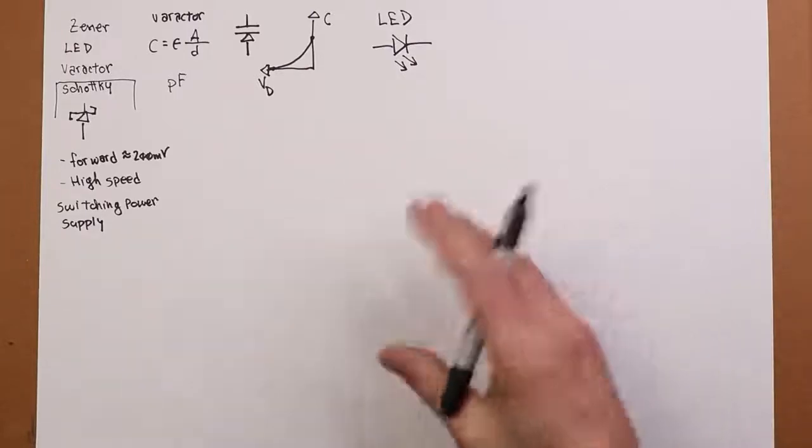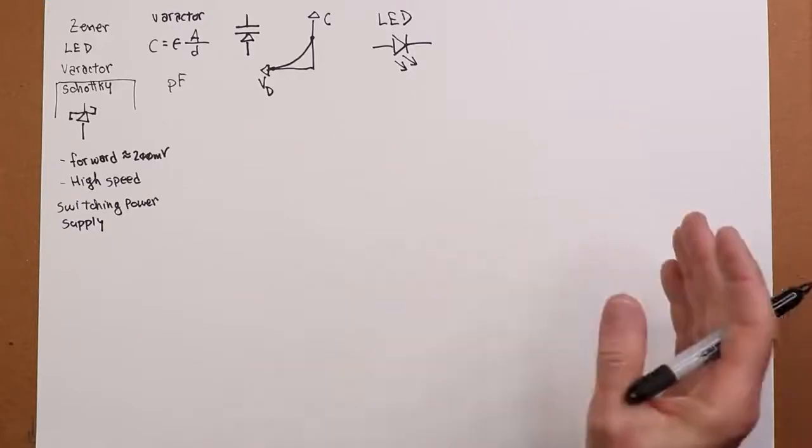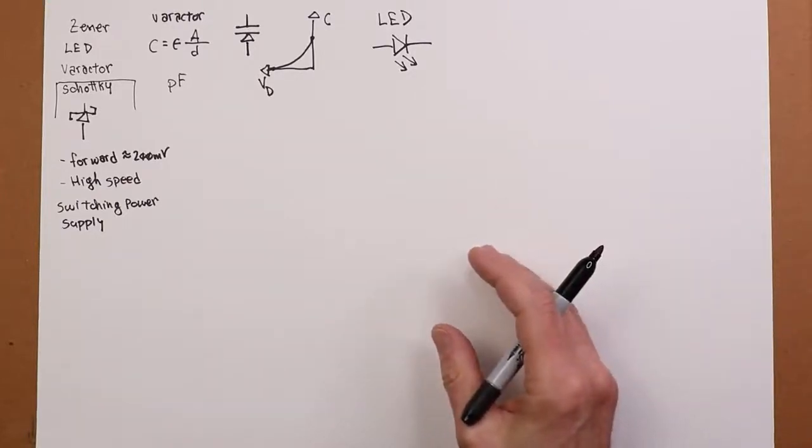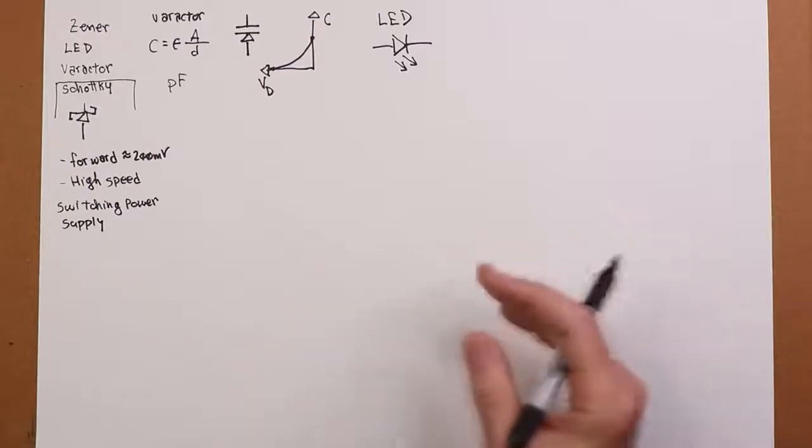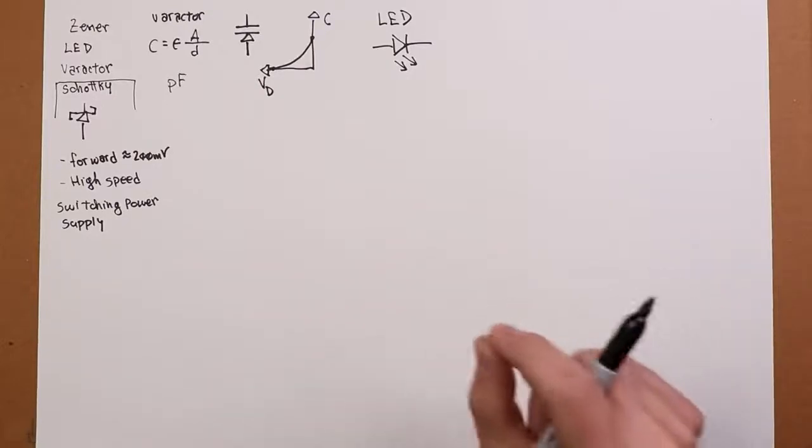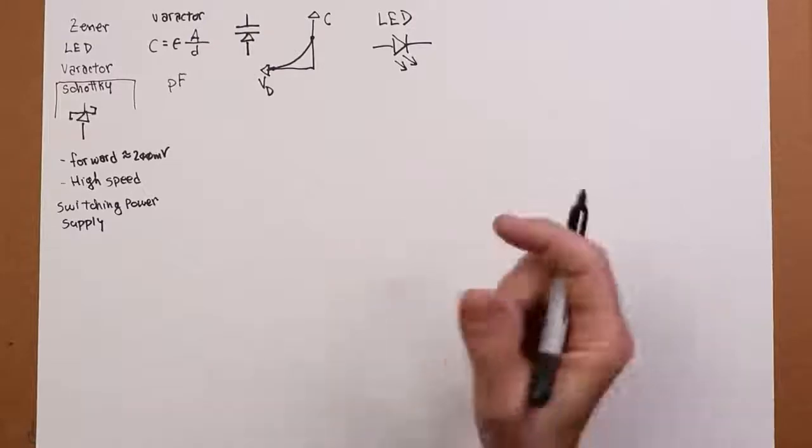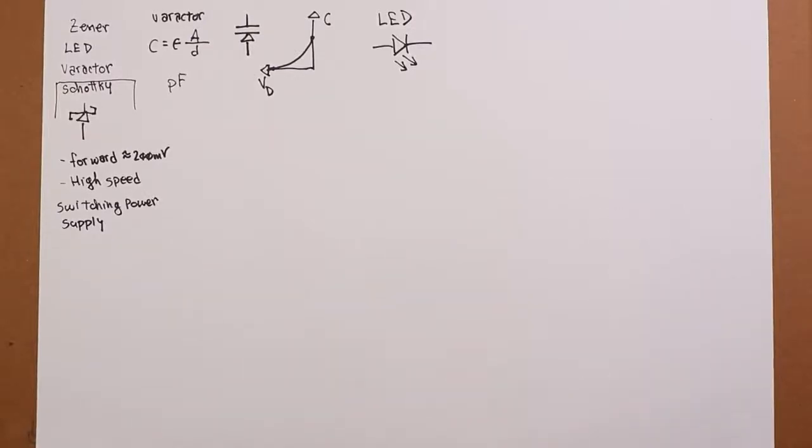So maybe a jumbo red LED, the forward potential might be 1.8 volts instead of 0.7. Maybe a high-powered blue might be 3 volts. It all depends on that manufacturer. So that's the important thing to remember. That forward potential is going to be larger than expected for a simple rectifying diode.